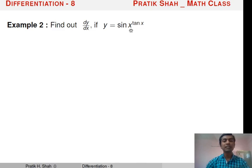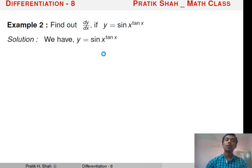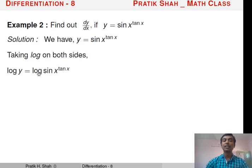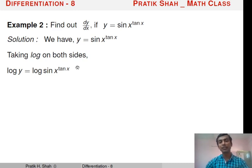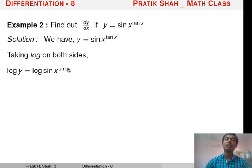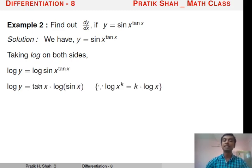Since the base is a function of x as well as the power is also a function of x, first we will apply the log function on both sides. Taking log on both sides, we get log y = log(sin x)^(10x). Now, using the beautiful property of the log function, the power is shifted into multiplication: log y = 10x · log(sin x).